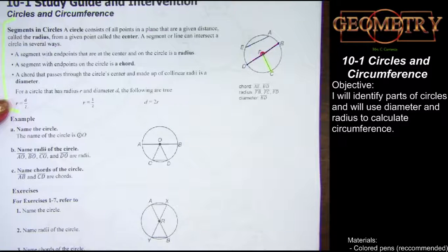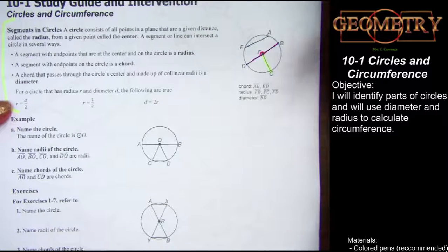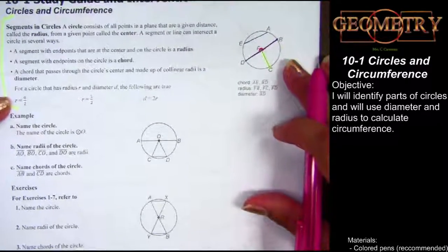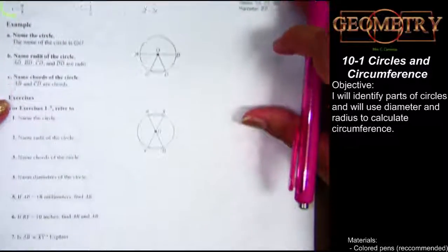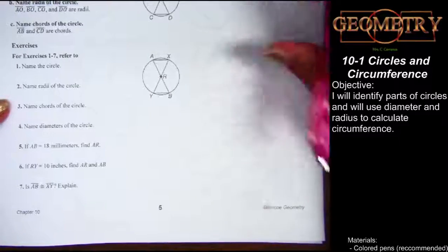We've got some formulas here that help us relate the measurement of the diameter to the radius. In these, R stands for radius and D stands for diameter. We'll use this to complete the examples here at the bottom of our study guide, numbers 1 through 7.